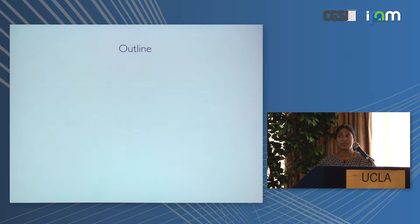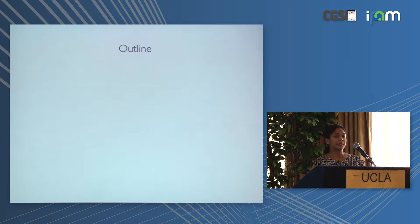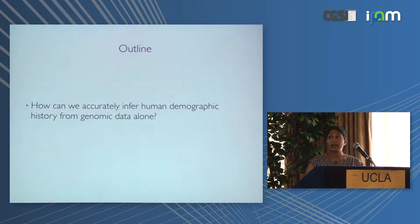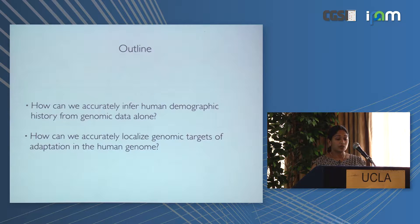This talk is billed as a tutorial and there may be some tutorial-esque aspects to it, but what I really want to give you is a sense of two different stories and two different statistical frameworks we can use to gain new insight into the past from genomic data alone. The applications will be couched in human data, but they are very applicable to a range of species. I'll cover how we can accurately infer demographic history from multi-locus sequence data, and how we can accurately localize genomic targets of adaptation.